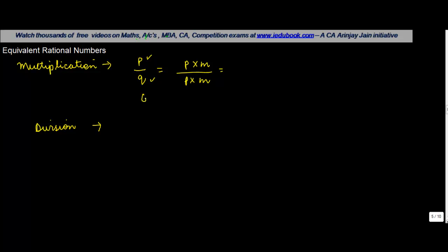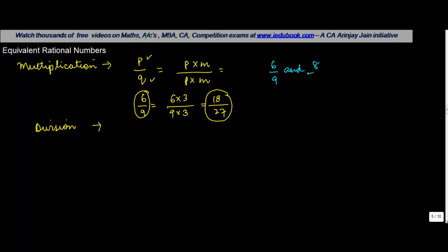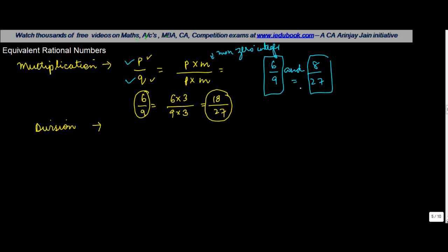For example, if you have 6 upon 9 and you multiply both 6 and 9 by 3, the value of this number is going to be equal to the value of the resulting number. In such a case, we say that 6 upon 9 and 18 upon 27 are equivalent rational numbers. The number obtained by multiplying a given rational number by a common nonzero integer M is known as an equivalent rational number.